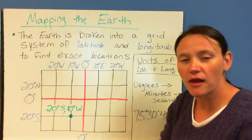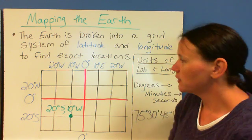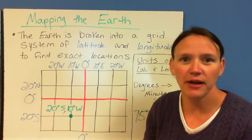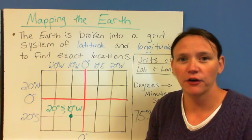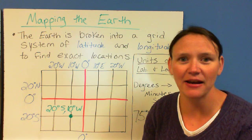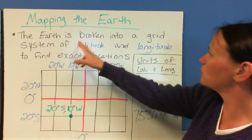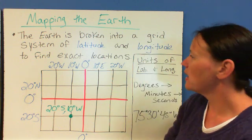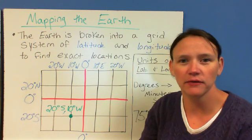So those are all evidences that the Earth is round. Some other things here, mapping the Earth. Figuring out where are we on Earth. This whole thing right here is a grid system using latitude and longitude. The Earth is broken into a grid system of latitude and longitude to find exact locations.